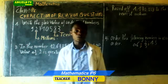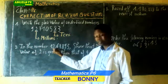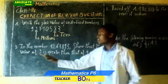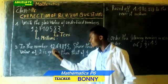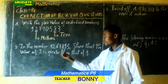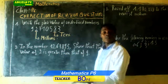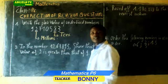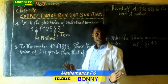Then number 2. In this number, it shows that the value of 2 — where is the 2? It is here. It is greater than that of 9. It means that here we are going to find firstly the value of 2. After finding the value of 2, we find also the value of 9. Then we compare.